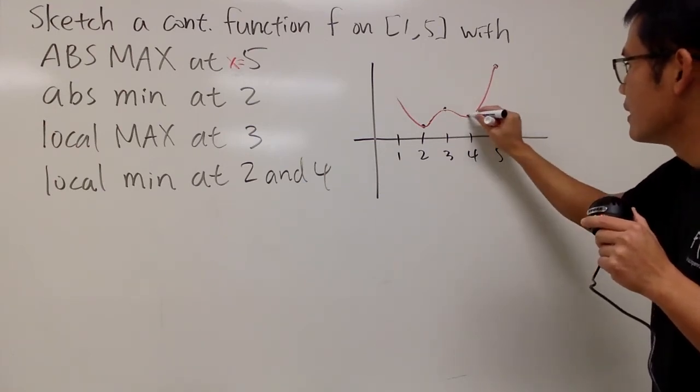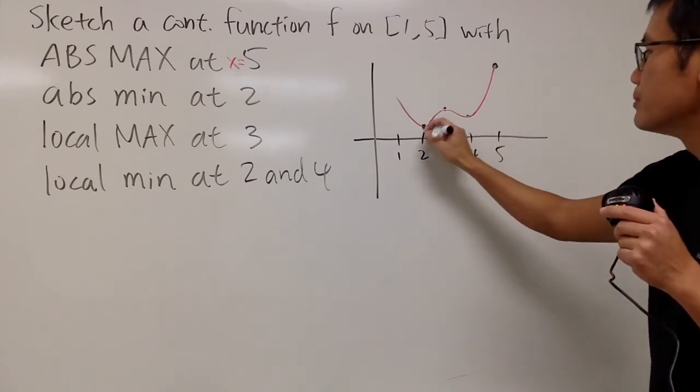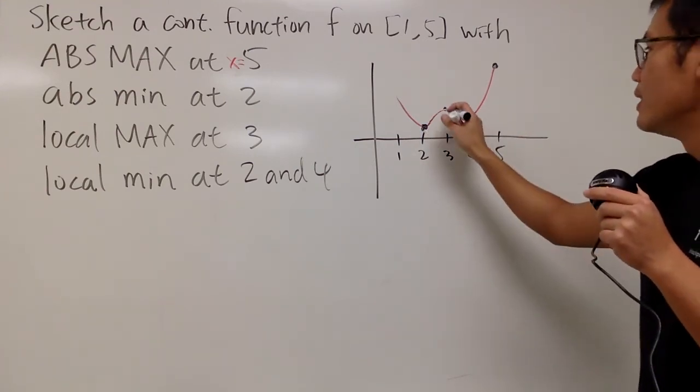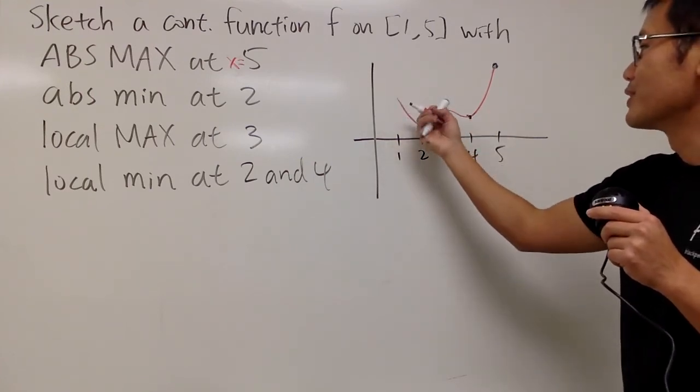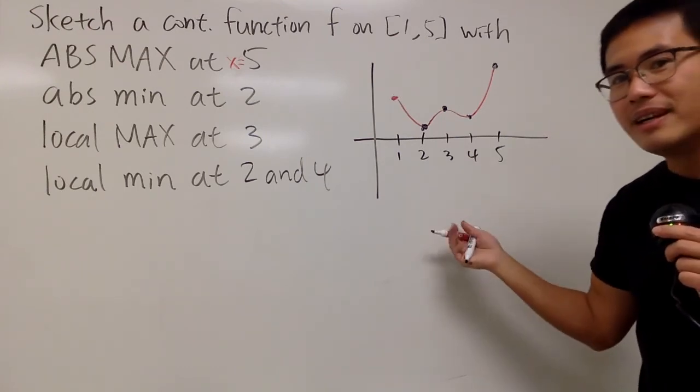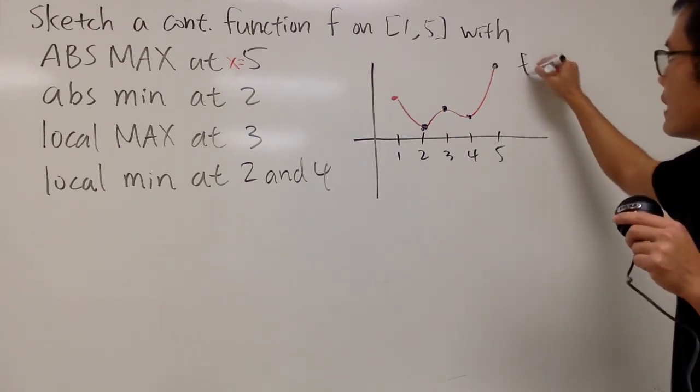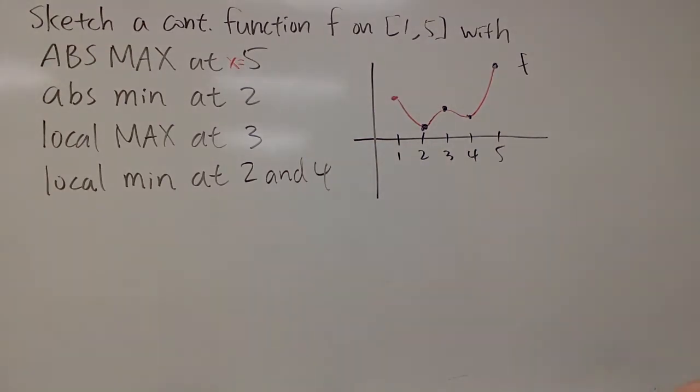So as you can see, absolute max, yeah? And then absolute min, yeah? And then local max, local min. And of course, this right here is just my end point right here. Anyway, this right here is an example of the function that will satisfy all this right here. So that's it. Thank you.